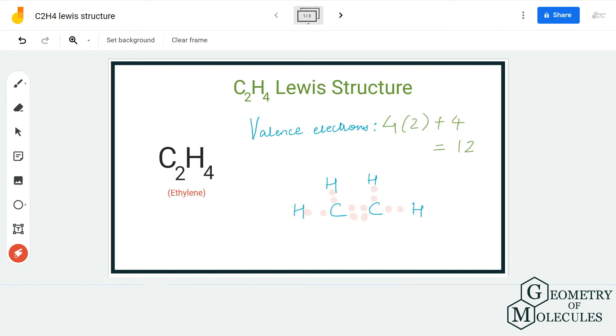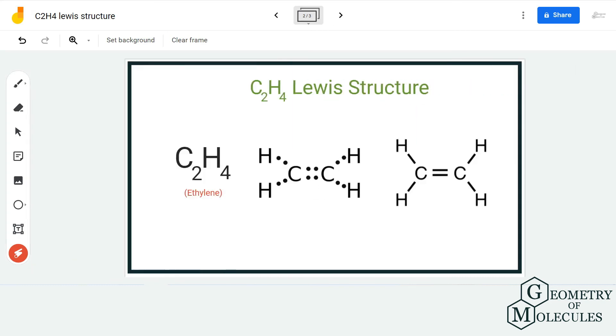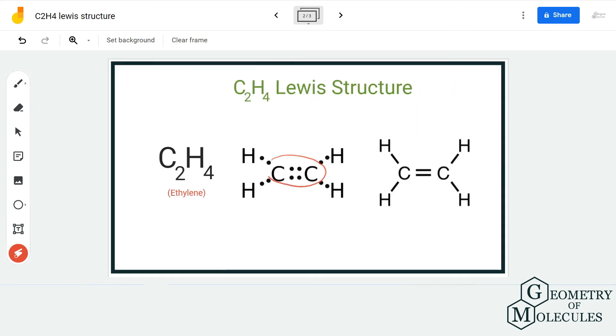So this is the Lewis structure of C2H4, in which there is a double bond between two carbon atoms and the carbon atoms are forming single bonds with two hydrogen atoms.